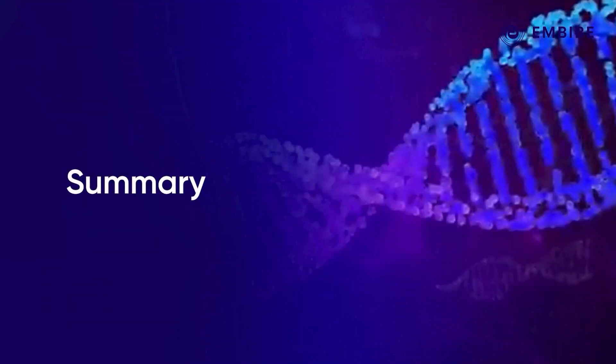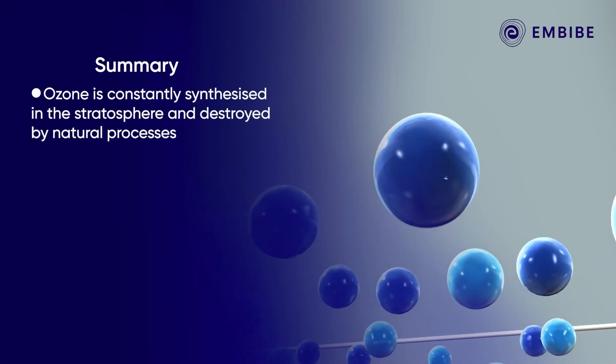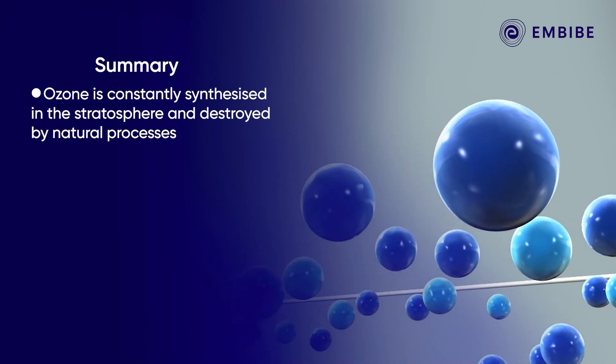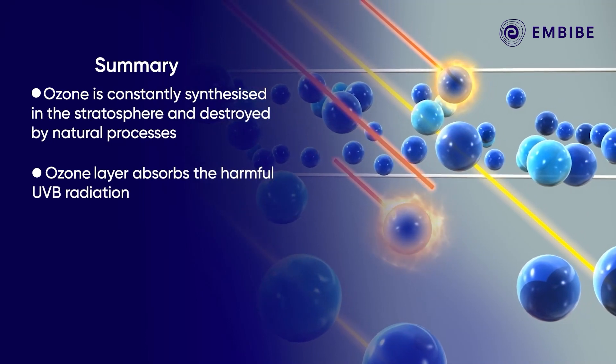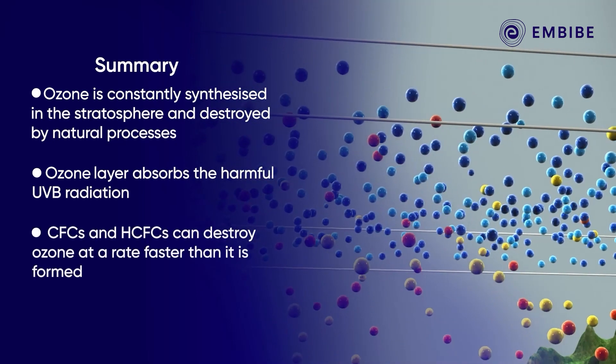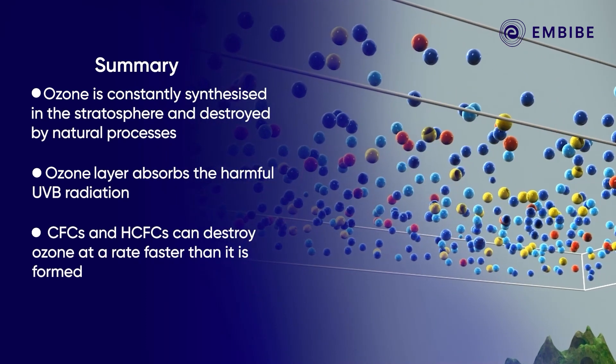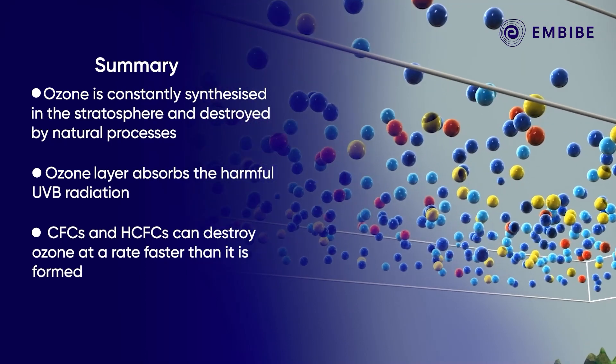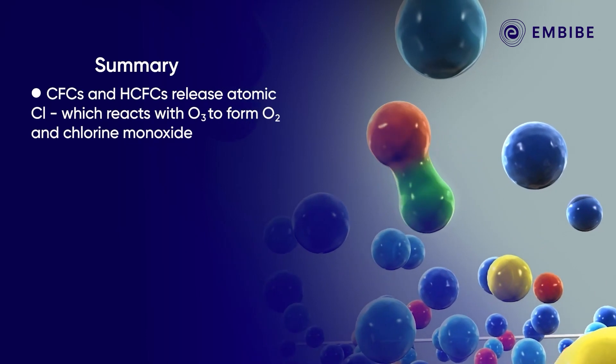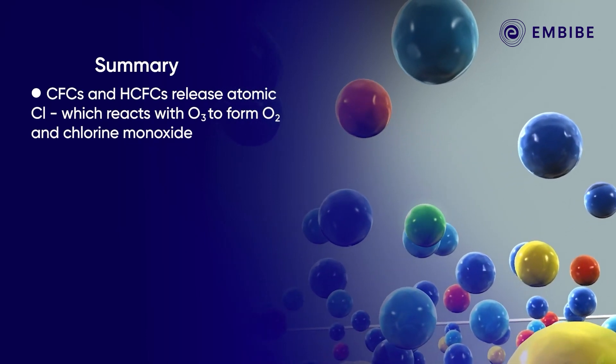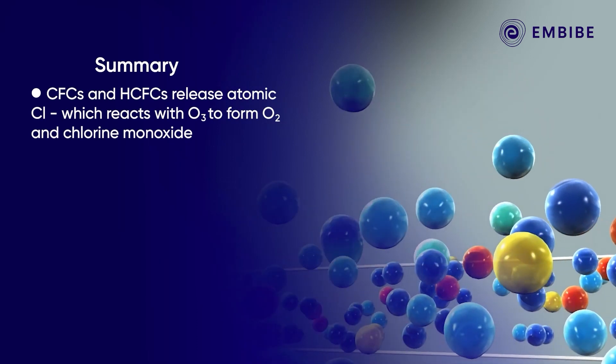Let us summarize. Ozone is constantly synthesized in the stratosphere and destroyed by natural processes. Ozone layer absorbs the harmful ultraviolet B radiation. Chlorofluorocarbons and hydrochlorofluorocarbons can destroy ozone at a rate faster than it is formed. CFCs and HCFCs release atomic chlorine which reacts with ozone to form oxygen and chlorine monoxide.